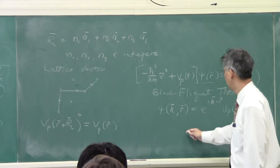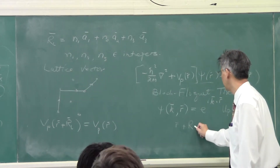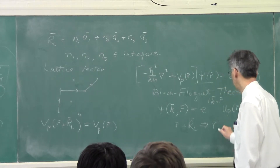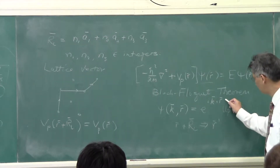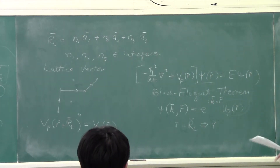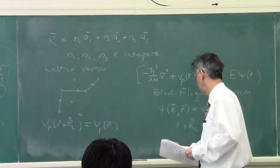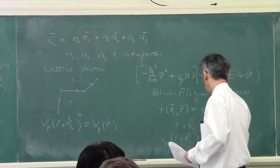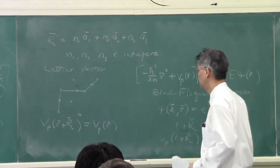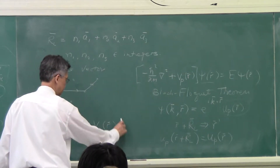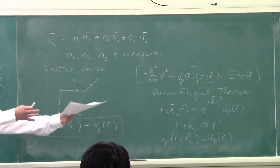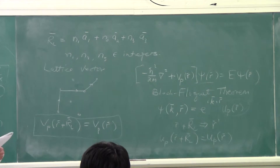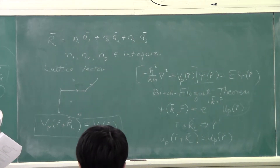Because if you translate the problem by a lattice vector R_L, the problem remains unchanged. And because the problem has to remain unchanged, u(r) must be a periodic function — u(r + R_L) must equal u(r) itself. With the argument that the problem remains unchanged: if you move the experiment by that much, the problem remains unchanged. So u must be periodic.